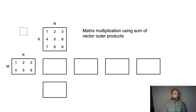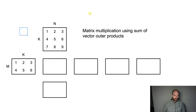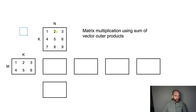I'm going to show you how to implement matrix multiplication using a sum of vector outer products. What I'm talking about will become clearer as you proceed. On the left is one matrix and above and to the right is the second matrix — this is the way I like to draw matrices when doing matrix multiplication. There's one input matrix here, the second input matrix here, and an output matrix.